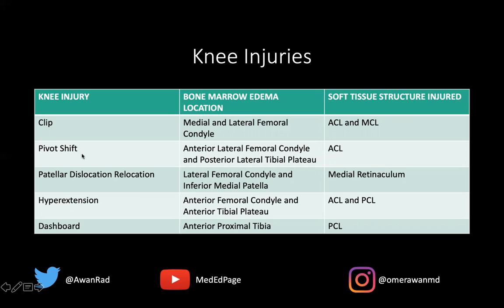Contrast that to a pivot shift injury, which is very common in skiing and American football, where you get marrow edema along the anterior lateral femoral condyle and the posterior lateral tibial plateau. That's always associated with just an isolated ACL injury — very high yield for the radiology core exam. Also very high yield is a patellar dislocation relocation, where you get marrow edema along the lateral femoral condyle and the inferior medial patella, and the injured soft tissue structure is the medial retinaculum.